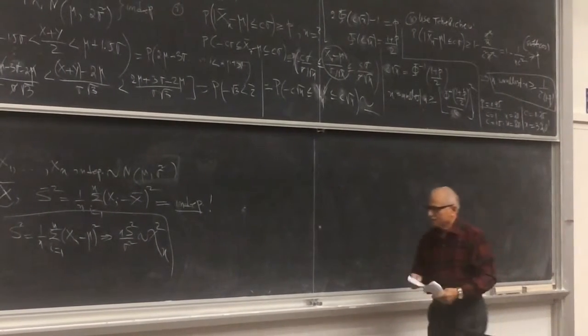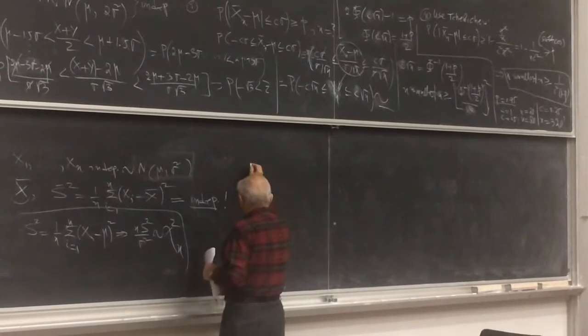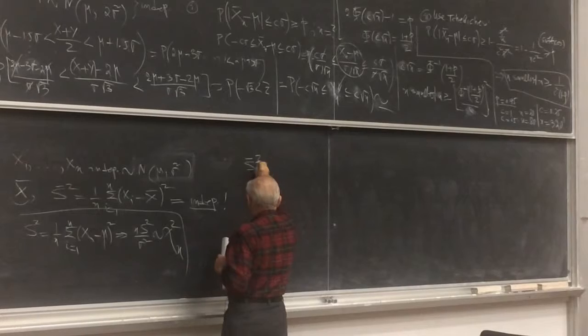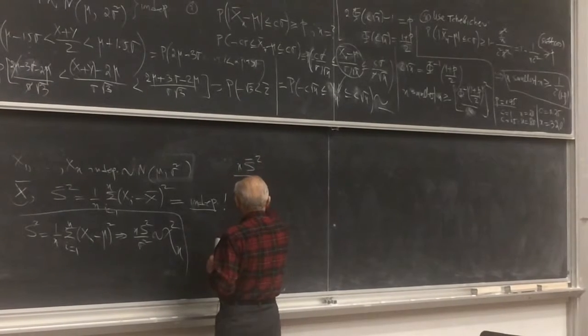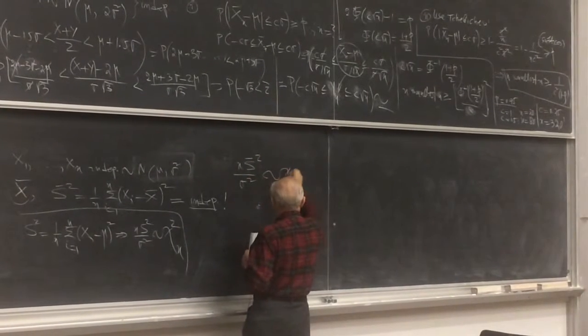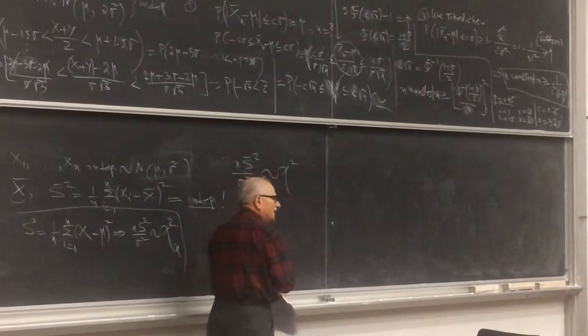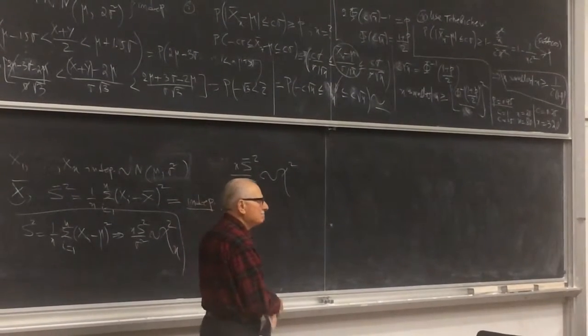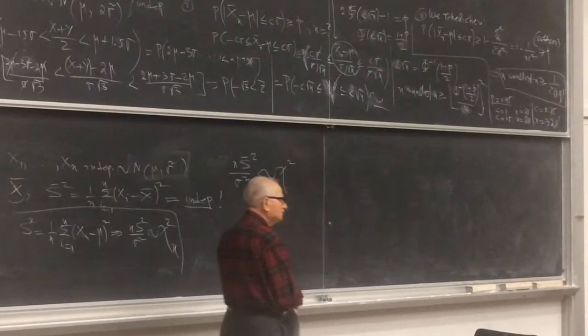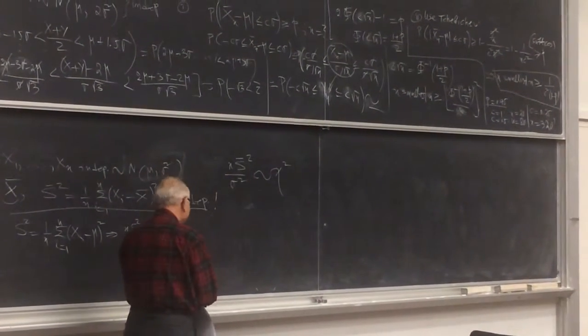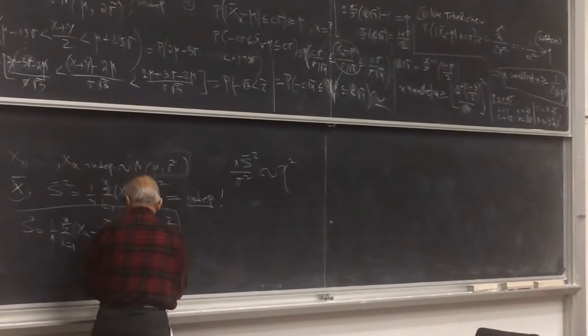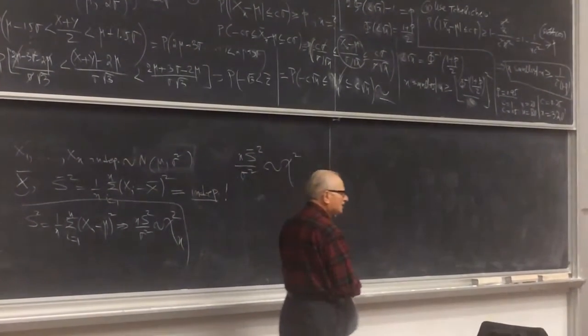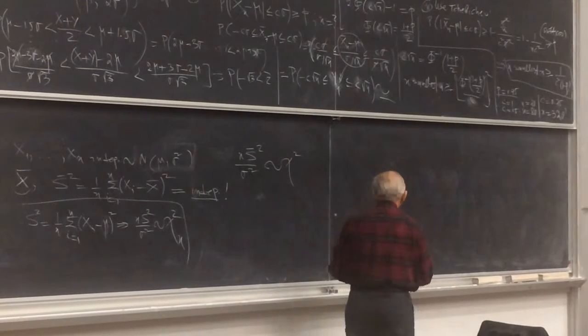Next stop. Now, n times s-bar squared over sigma squared is itself chi-square distributed, but what do you think that the degrees of freedom ought to be? We replace mu by something, we have to pay for it. n minus 1? Yeah, n minus 1.